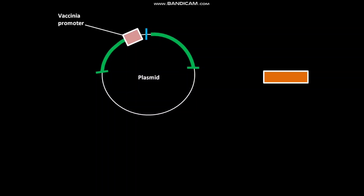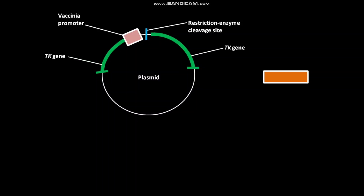This is a plasmid vector having a vaccinia promoter sequence. Adjacent to the vaccinia promoter sequence, a restriction enzyme cleavage site is present. On both sides of the vaccinia promoter sequence, TK genes are present. TK gene stands for thymidine kinase gene.